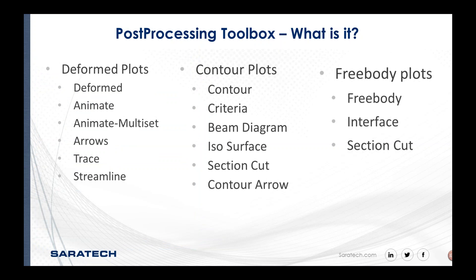Inside the post-processing toolbox you have these options: deformed plots, contour plots, and free body plots. Under deformed plots we can do deformed, animate, animate multi-set, arrow plots, trace plots, and streamline plots. Under contour we have contour plots, criteria plots, beam diagrams, isosurface, section cuts, and contour arrows. And under free body we can create individual free bodies, find interface loads, and do section cuts.